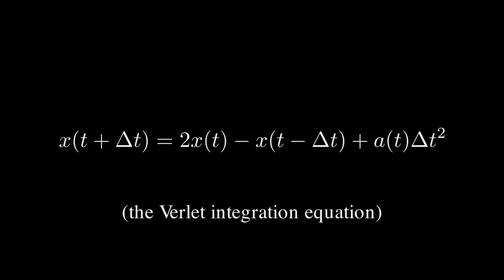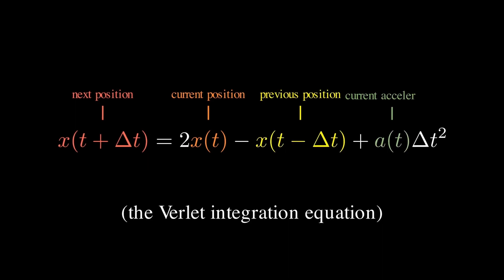Here, x(t + Δt) represents the object's next position, x(t) represents the object's current position, x(t - Δt) represents the object's previous position, a(t) represents the object's current acceleration, and Δt represents the time between position updates.